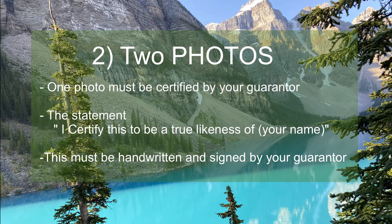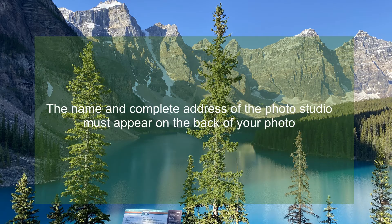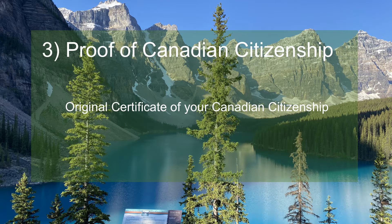The second requirement for your passport application is two photos — one photo must be certified by your guarantor. At the back of one photo, your guarantor will write the statement 'I certify this to be a true likeness of' and then your name, followed by their signature. Make sure the name and complete address of the photo studio appear on the back of your photo.